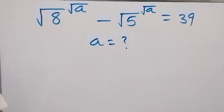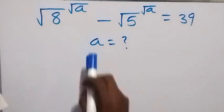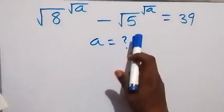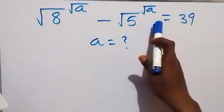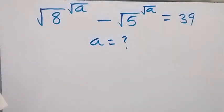Hello, you are welcome. We are going to solve for a in this algebra problem. We have root 8 raised to power root a, then minus root 5 raised to power root a, equals 39.